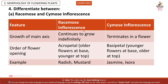Question 4: Differentiate between (a) Racemose and Cymose inflorescence. Feature — Growth of main axis: Racemose continues to grow indefinitely; Cymose terminates in a flower. Order of flower opening: Racemose is acropetal — older flowers at base, younger at top; Cymose is basipetal — younger flowers at base, older at top. Example: Racemose — radish, mustard.